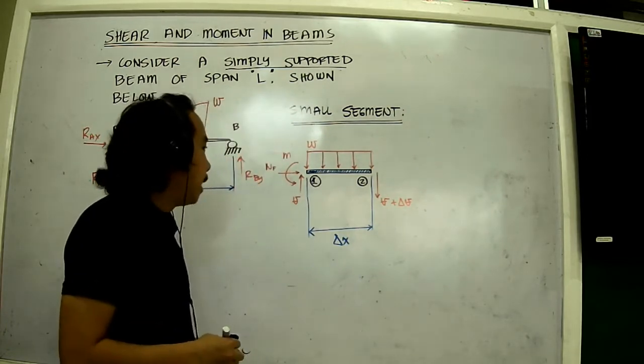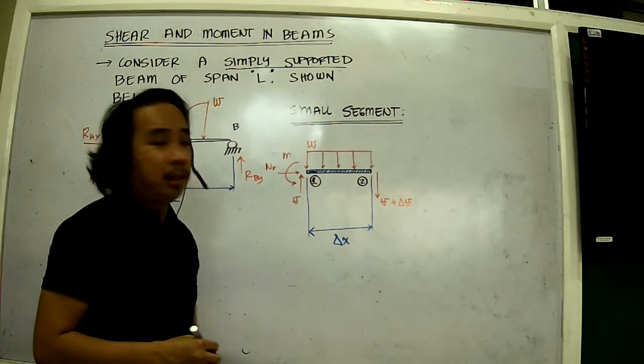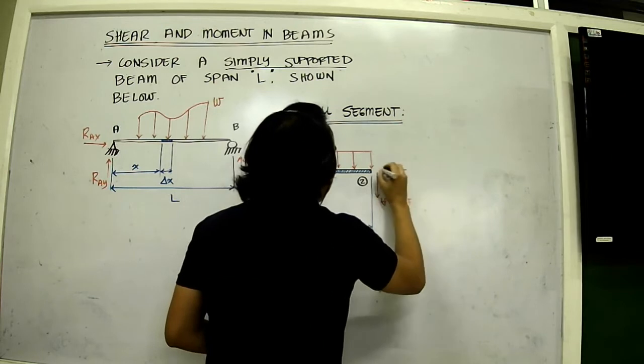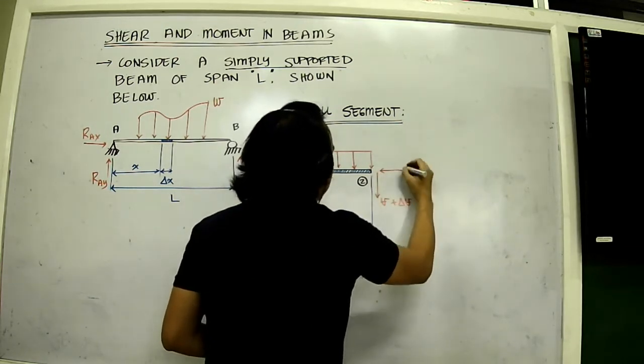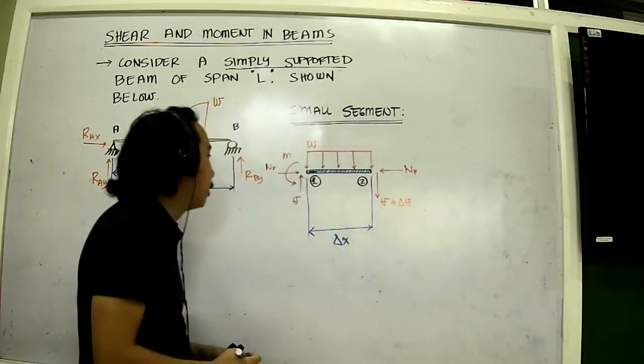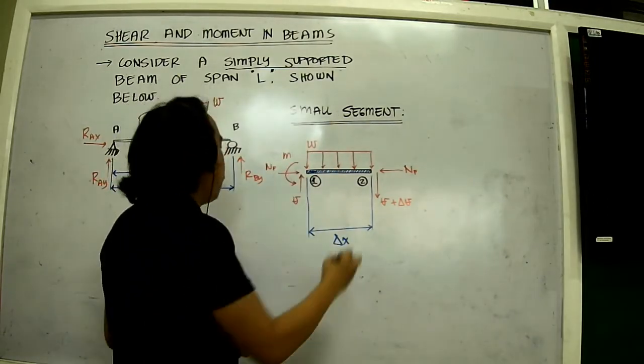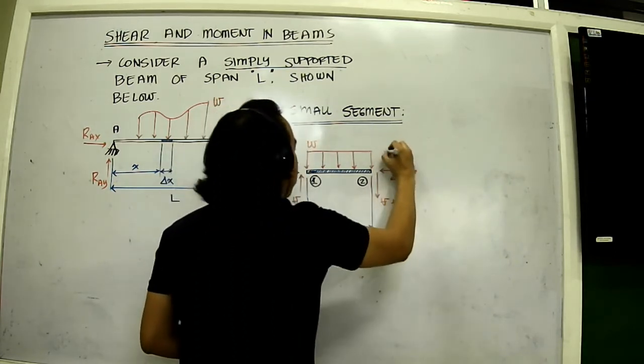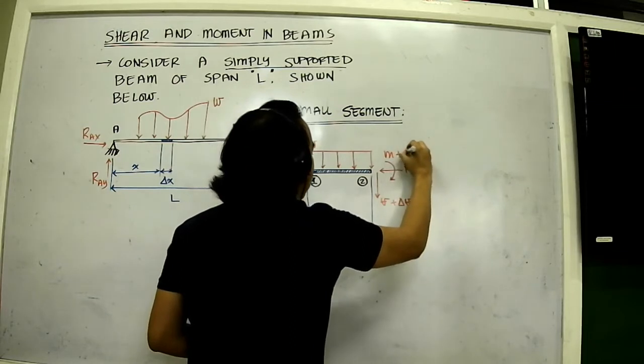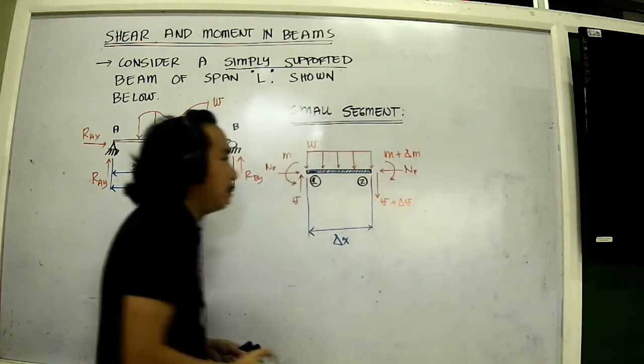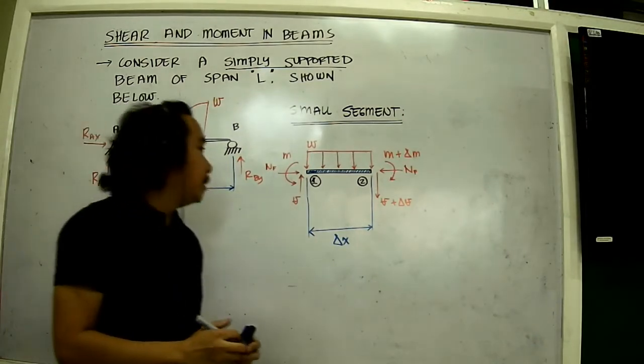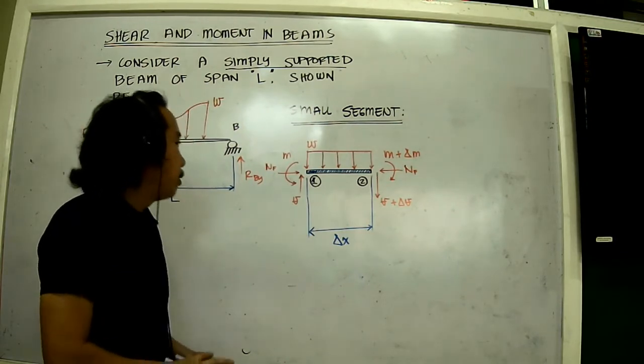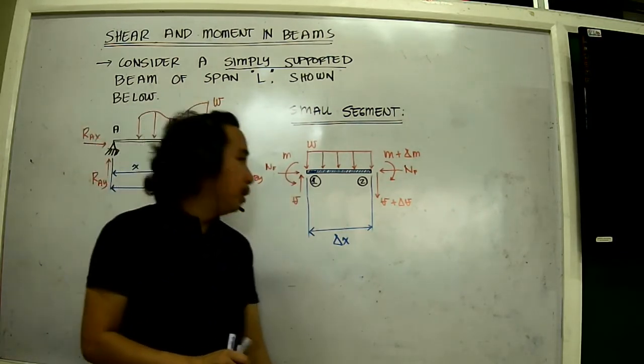Aside from that, if this is point two, to keep the nature of equilibrium, I would have this normal force directed opposite to the original normal force at point one. Aside from that, we'll have moment as well. Moment plus, take note of the differential, delta M. So we have a free body diagram almost. The only thing that we haven't evaluated here is the load, which is W.